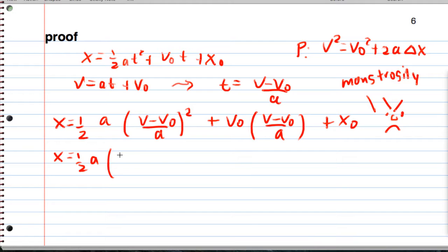One-half a, and I'm just going to math this like it's never been mathed before. So v squared minus 2v v naught, oh my gosh, plus v naught squared, all over a squared. What is this craziness?